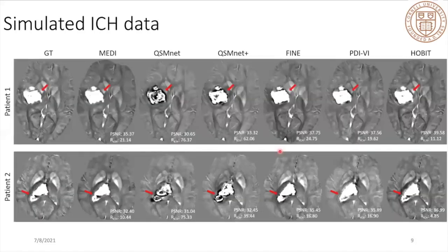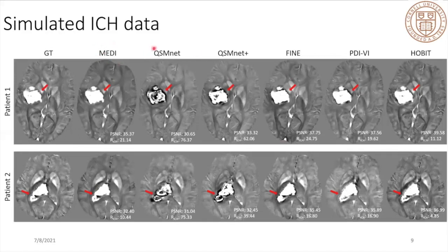We apply the pre-trained network on simulated ICH data. Here we have several benchmarks to compare. MEDI is the total variation regularized iterative reconstruction. QSMnet is the first deep learning based QSM reconstruction method. QSMnet+ augments the pre-trained network training dataset to cover a broader range of susceptibility. FINE, of course, and also the comparable realistic dipole inversion methods PRI-VI and HOBIT.